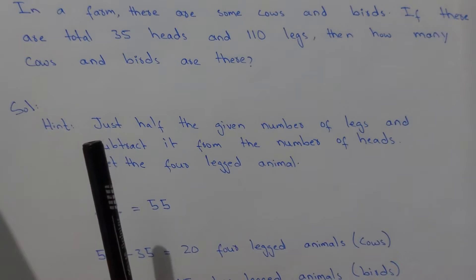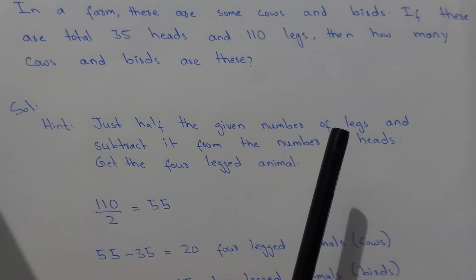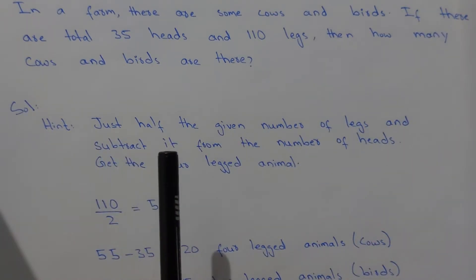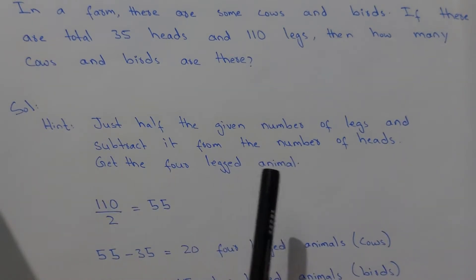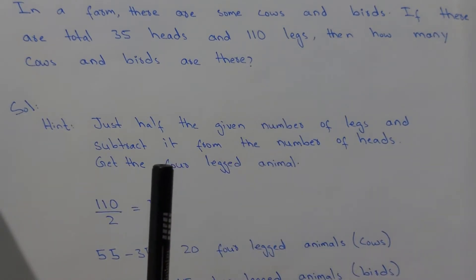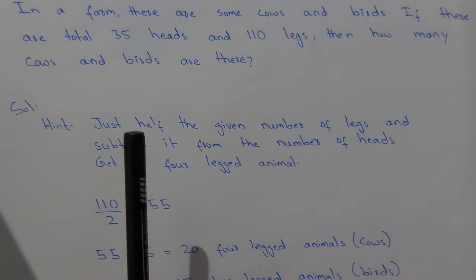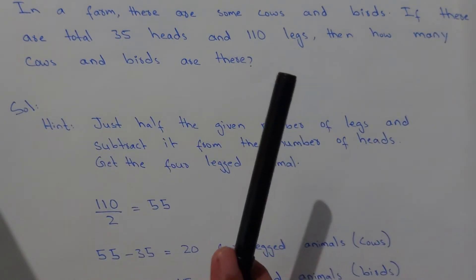We just half the number of legs and subtract it from the number of heads. Then we get the four-legged animal, which means cow in this case. Now let's suppose we half the number of legs. It means 110 divided by 2, that will be 55.